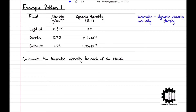However, we need them in kilograms per metre cubed. So first of all, we will convert the densities of each fluid into kilograms per metre cubed. To do this, we must multiply our current densities by 1000, and doing so, we can work out that the density of our light oil is 875 kilograms per metre cubed, the density of the gasoline is 750 kilograms per metre cubed, and the density of the salt water is 1020 kilograms per metre cubed.